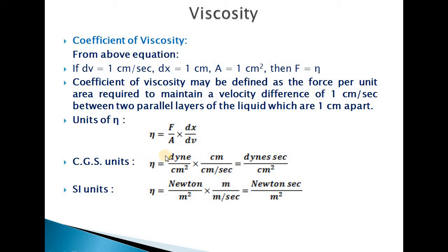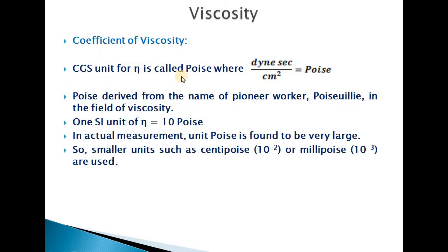The units of coefficient of viscosity: in CGS units, with force in dynes, area in cm², dx in cm, and dv in cm/s, η equals dyne·second/cm², which is known as poise. In SI units, η equals Newton·second/m². The CGS unit poise is named after a pioneer worker in the field of viscosity. The relation between units is: 1 SI unit of η = 10 poise.